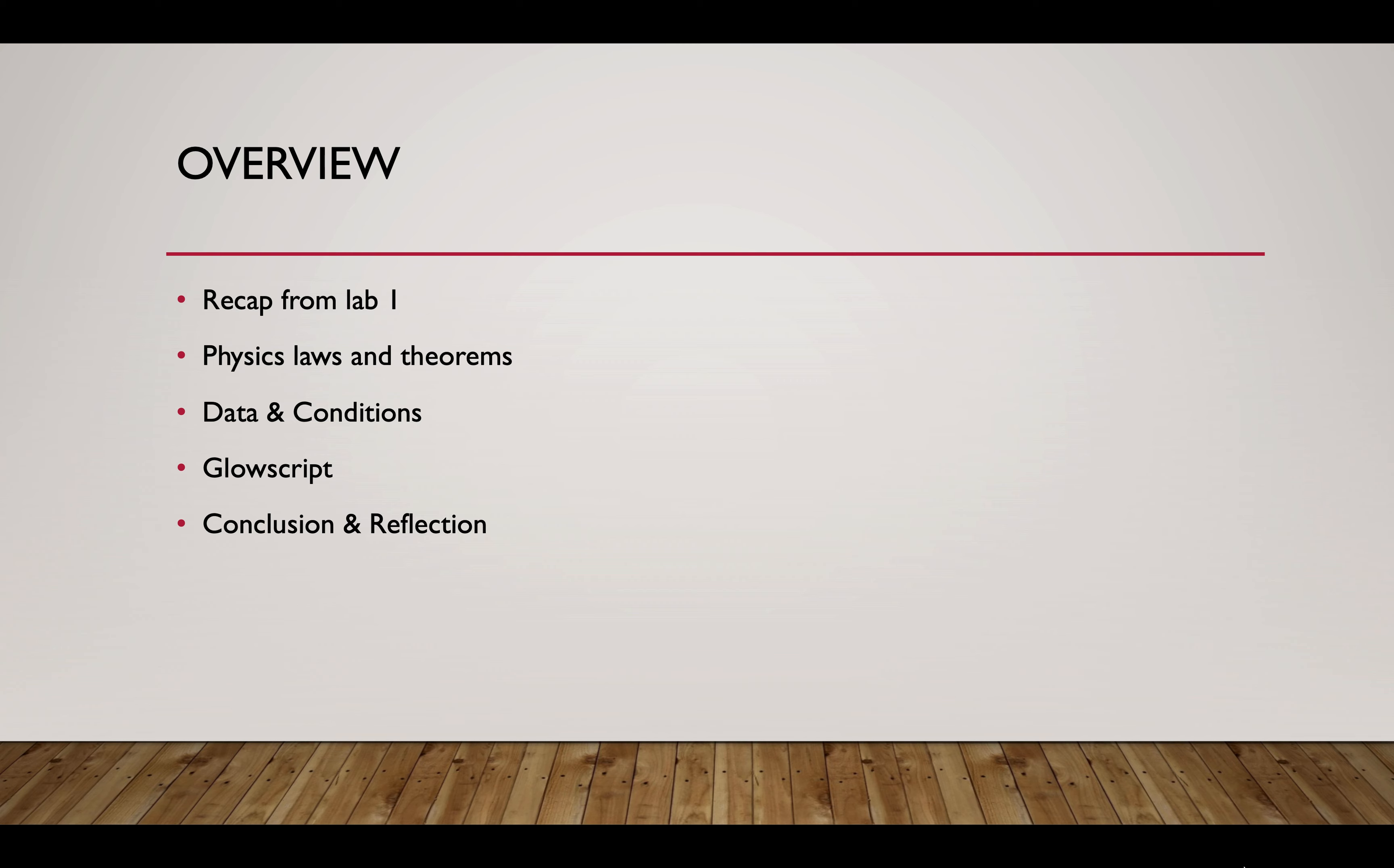Number three is the data and conditions. It's the prerequisite for us to understand the experiment when we know how we get our data and what assumptions we made. Number four is the Glowscript, a modeling of what we are dealing with in this entire lab and an explanation of the forces. And number five at the end is the conclusion and reflections.